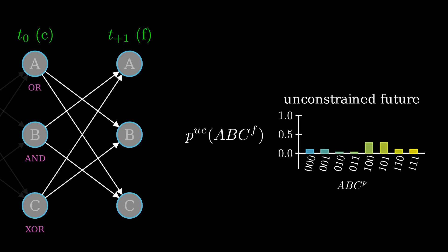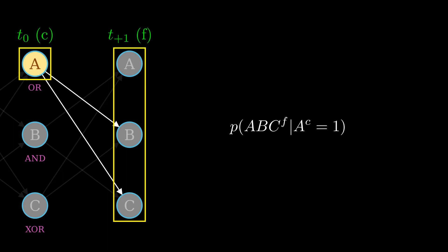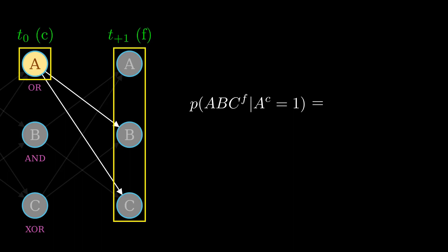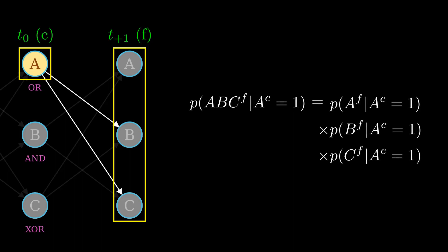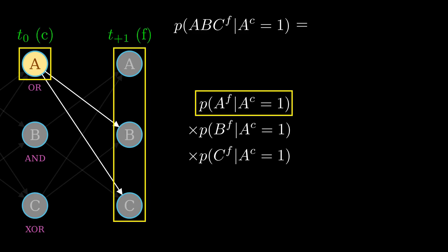Okay, we're done with the unconstrained future. So now let's assume that current A has 1 as output. We can ask the same question about the information that A carries, but in this case for the future state. To get there, we need to know what is the probability for future states given that current A is 1. Using the idea of virtual mechanisms and the assumption that the conditional probabilities are independent, we can break the probability of the future state into the probabilities of its components. Here we have current A fixed as 1. But notice that, even though we are working on the effects of current A, we still need to use the connections for the other mechanisms since they can influence the probability of a future state.